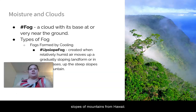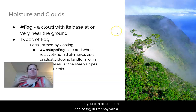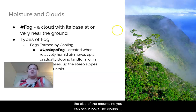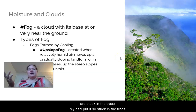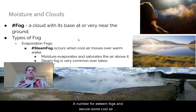Type three is upslope fog — created when relatively humid air moves up a landform or steep mountain slopes, cooling as it rises. You can see this in Hawaii or in Pennsylvania, where it looks like clouds are stuck in the trees on the mountain roads.